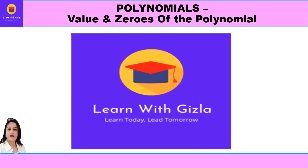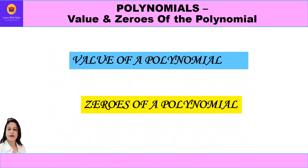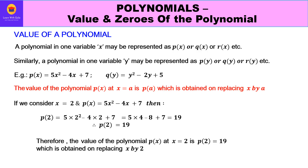Hello dear students, welcome to YouTube channel Learn with Gizla. In this video on polynomials, we shall be studying about the value of a polynomial and zeros of a polynomial. First of all, let us see how to denote a polynomial which has only one variable say x. A polynomial in one variable x may be represented by p(x), q(x), or r(x). Similarly, if the polynomial has one variable say y, it will be represented by p(y), q(y), or r(y).